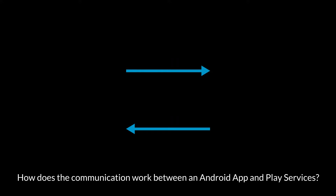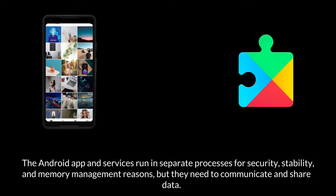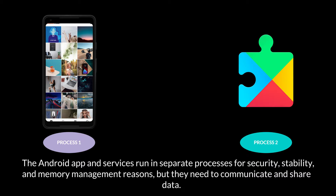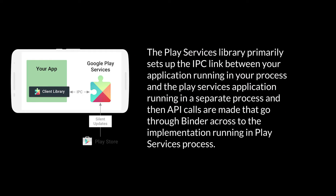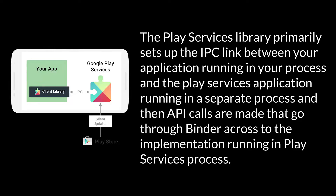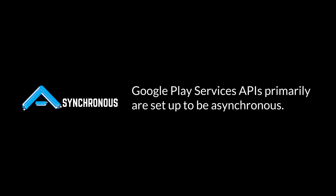How does the communication work between an Android app and Play Services? The Android app and services run in separate processes for security, stability, and memory management reasons, but they do need to communicate and share data. This is where the Binder mechanism is used. The Play Services library primarily sets up the IPC link between your application running in your process and the Play Services application running in a separate process, and API calls are made that go through Binder across the implementation running in the Play Services process. Google Play Services are primarily set up to be asynchronous.